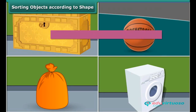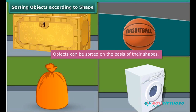Objects around us are made up of a large variety of materials. A box is a cube or cuboid, whereas a ball is a sphere. A laundry bag is cylindrical in shape, whereas a washing machine is cuboidal. Thus, we can classify objects on the basis of their shapes as well.